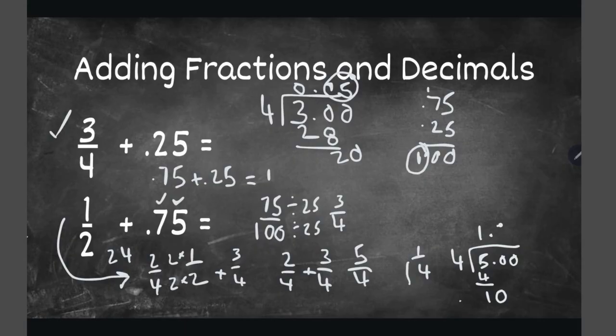Place the decimal there. 2 times 4 is 8. 10 minus 8 is 2. Bring down this 0 to make 20. 4 goes into 20 five times. There it is in decimal form: 1.25. I hope that was helpful in adding fractions and decimals.